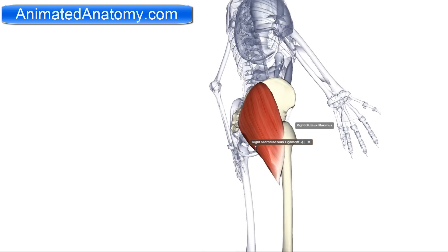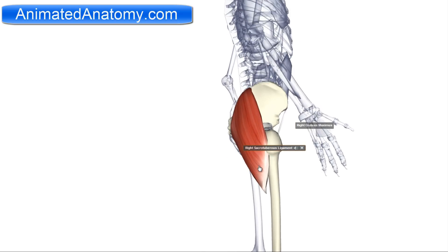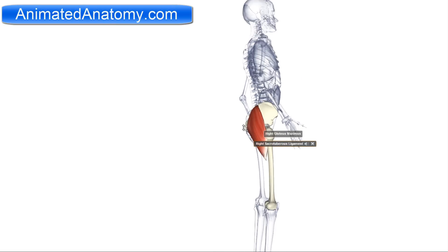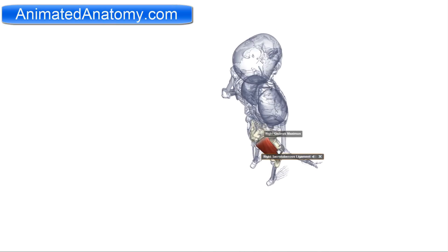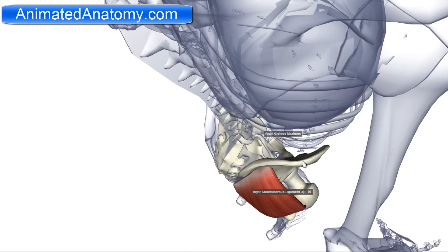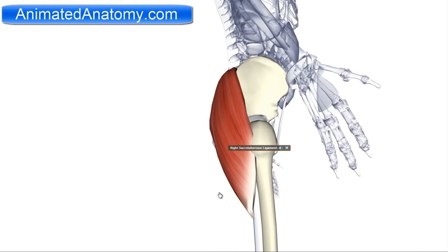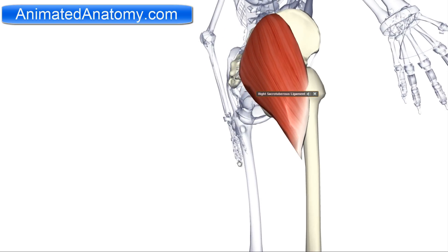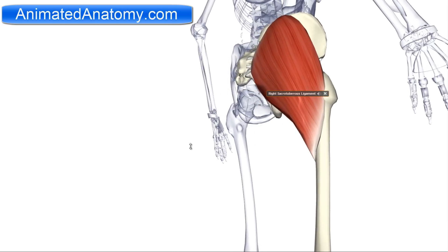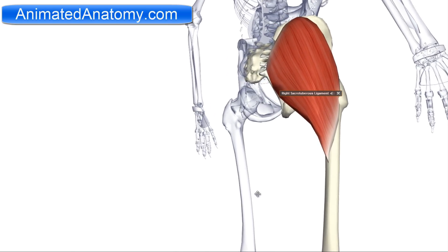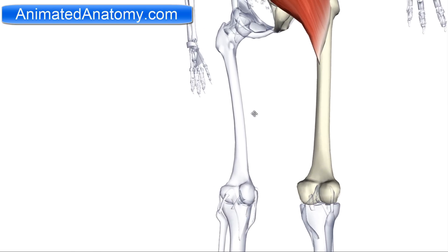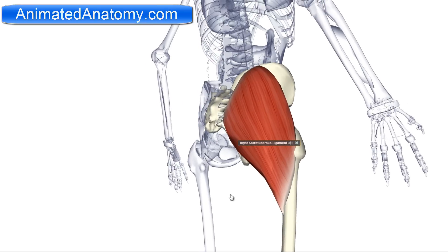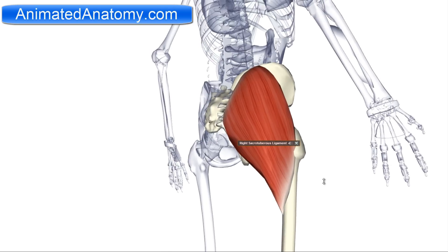Now if you look at it from here, when it contracts it is obviously going to extend the hip joint. And if you look at it from above, when it contracts it is going to make the leg rotate outwards, that means laterally. Through the fascia lata, this muscle actually supports the extended knee. And it is also the chief anti-gravity muscle in sitting.